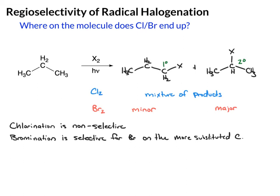So we next want to ask ourselves why this is — why do we have this particular outcome? If you think back to the previous section where we looked at the thermodynamics of these reactions, we saw that the chlorination was exothermic by negative 25 kcals per mole, versus the bromination, which was also exothermic but by a much smaller value — negative 7.9 kcals per mole.